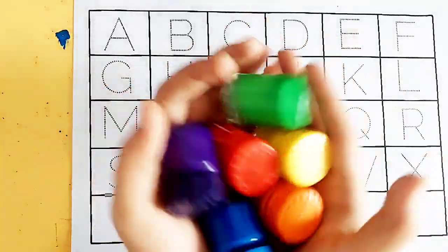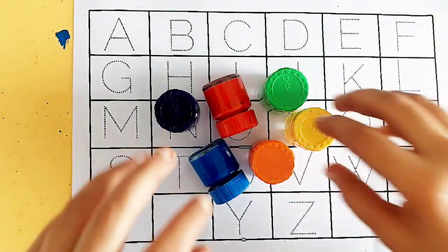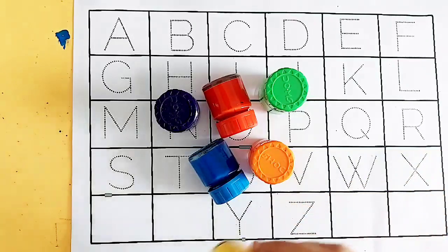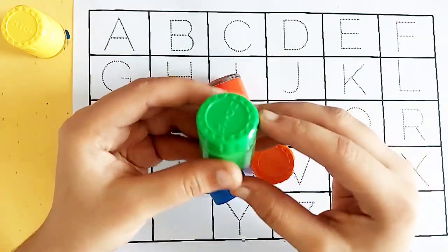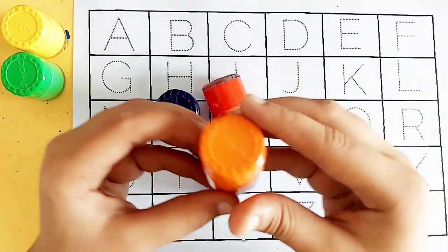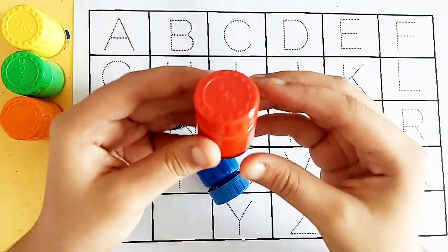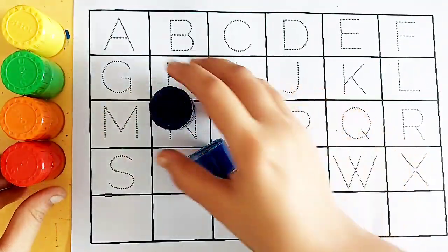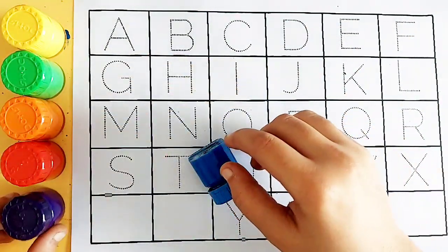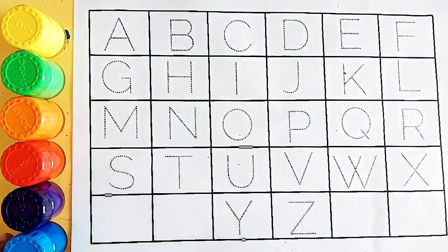Hello kids, let's learn some colors. Yellow color, yellow color. Light green color, light green color. Orange color, orange color. Red color. Purple color. Blue color, blue color.